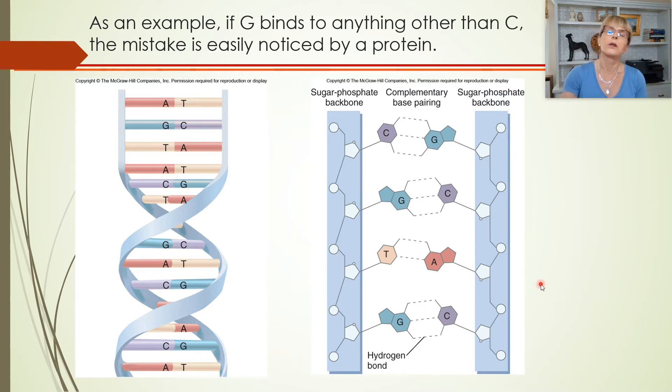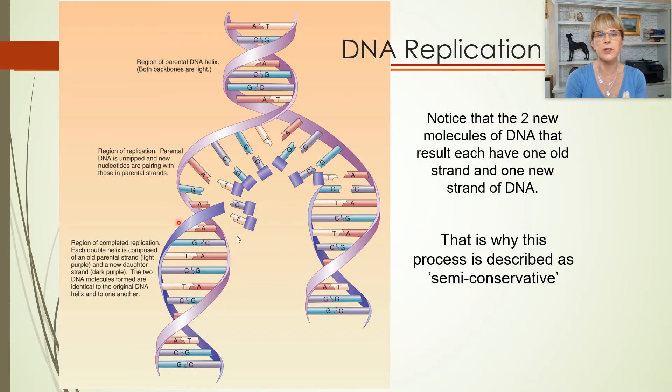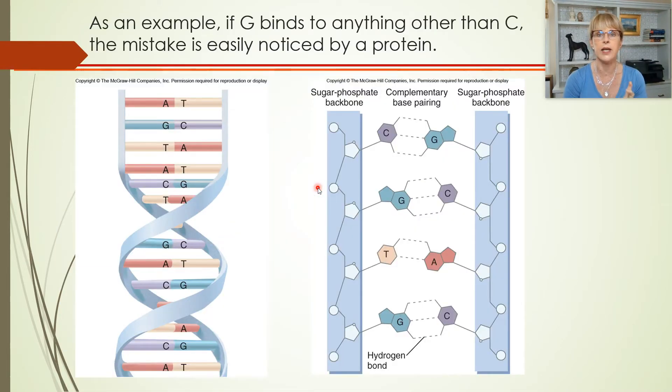And they always go together. One big, one little. One pair has got three hydrogen bonds and one pair has got two hydrogen bonds, always. And in that way, if you are the enzyme that's busy building this DNA, it is very difficult for you to make a mistake. That was part one. Very difficult to make a mistake.